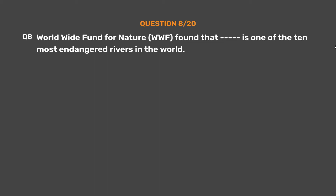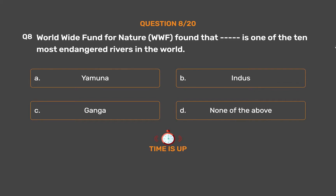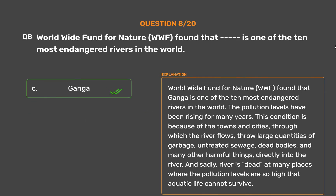Question number 8: Worldwide Fund for Nature (WWF) found that dash is one of the 10 most endangered rivers in the world. Option A: Yamuna. Option B: Indus. Option C: Ganga. Option D: None of the above. The correct answer is Option C: Ganga. WWF found that Ganga is one of the 10 most endangered rivers in the world. The pollution levels have been rising for many years because towns and cities through which the river flows throw large quantities of garbage, untreated sewage, dead bodies and many other harmful things directly into the river. Sadly, the river is dead at many places where pollution levels are so high that aquatic life cannot survive.